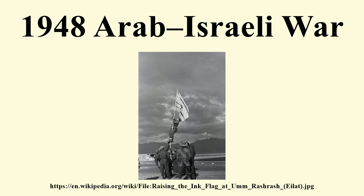In preparation for the offensive, Haganah successfully launched Operations Yiftach and Ben-Ami to secure the Jewish settlements of Galilee, and Operation Kilshon, which created a united front around Jerusalem. The inconclusive meeting between Golda Meir and Abdullah I, followed by the Kfar Etzion massacre on 13 May by the Arab Legion, led to predictions that the battle for Jerusalem would be merciless. On 14 May 1948, David Ben-Gurion declared the establishment of the State of Israel, and the 1948 Palestine War entered its second phase with the intervention of the Arab state armies and the beginning of the 1948 Arab-Israeli War.